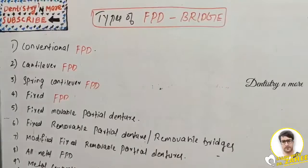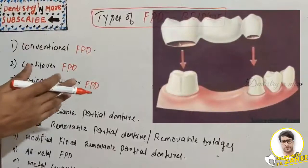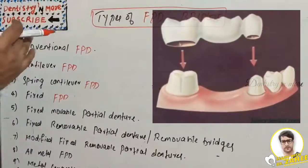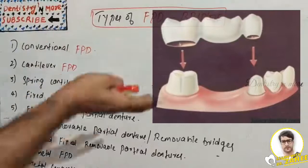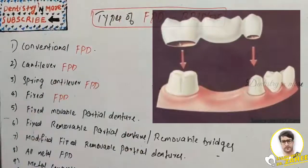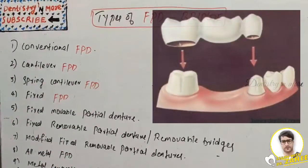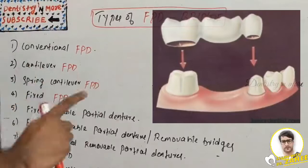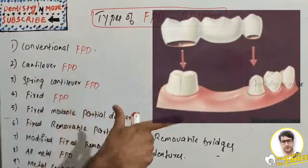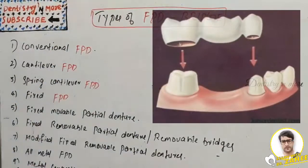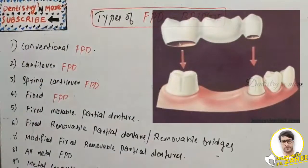In conventional FPD, this is the most commonly used type. The design involves fabrication of an FPD which takes support from abutments on either side of the edentulous space. The design may vary according to the conditions of the abutment, but the abutments on either side should be able to support the fixed partial denture.